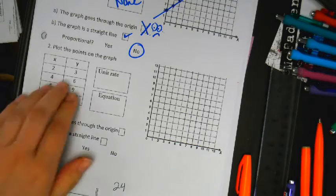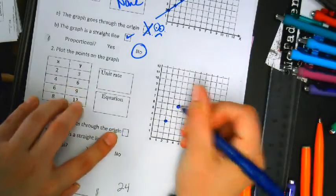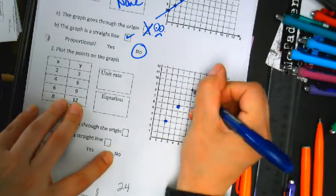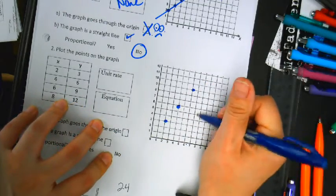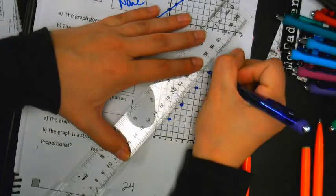Alright. 2, 3, 4, 6, 6, 9, 8, 12. It's straight. It's straight. And does it go through the origin?